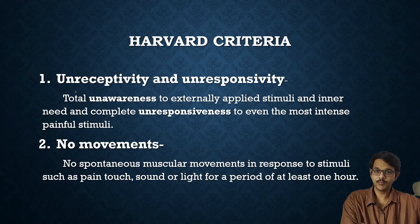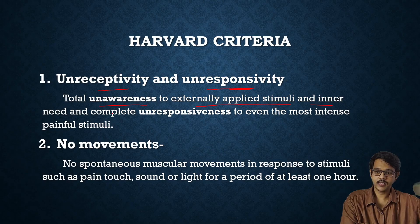In Harvard's criteria, the first point is unreceptivity and unresponsivity. In this, there is total unawareness to externally applied stimuli and inner need, and complete unresponsiveness to even the most intense painful stimuli. This point tells that when the person is unresponsive to even the strongest stimuli — like pinching or rubbing the knuckles on the sternum — unresponsivity is present.